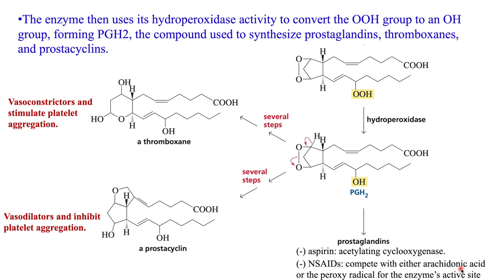From prostaglandin H2, thromboxane is formed. Thromboxane performs vasoconstriction — it constricts your blood vessels — and also stimulates platelet aggregation. Prostacycline is also synthesized from PGH2, and its role is just opposite to thromboxane: it performs vasodilation and inhibits platelet aggregation. So both activities are opposite to each other, and together they maintain the balance of the human body.